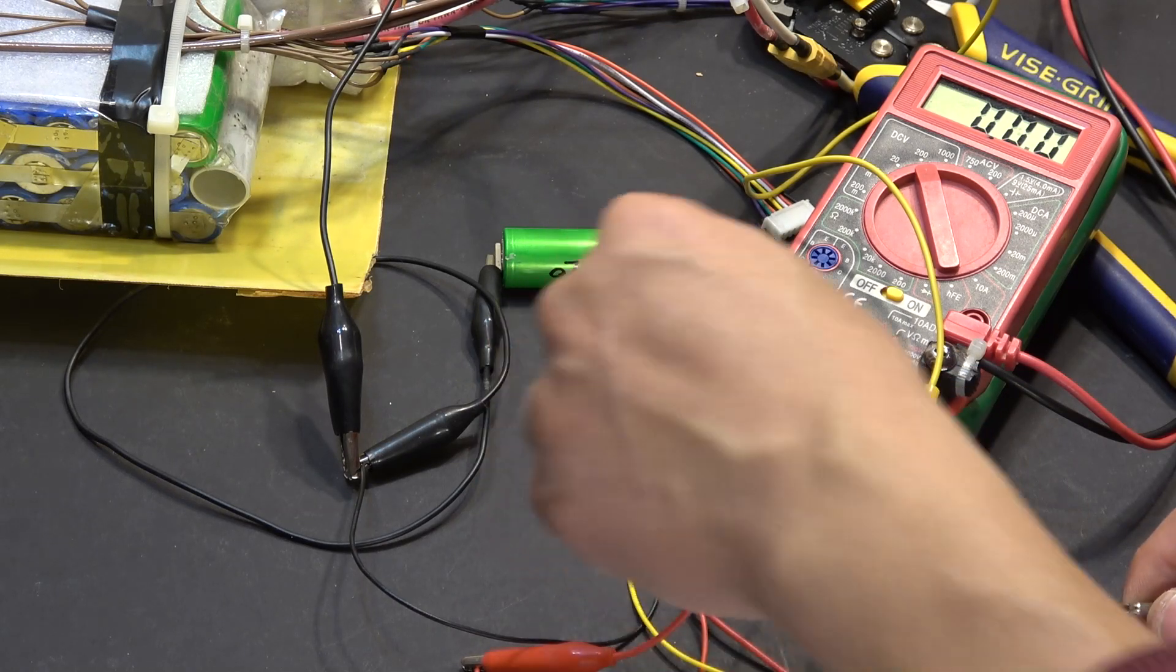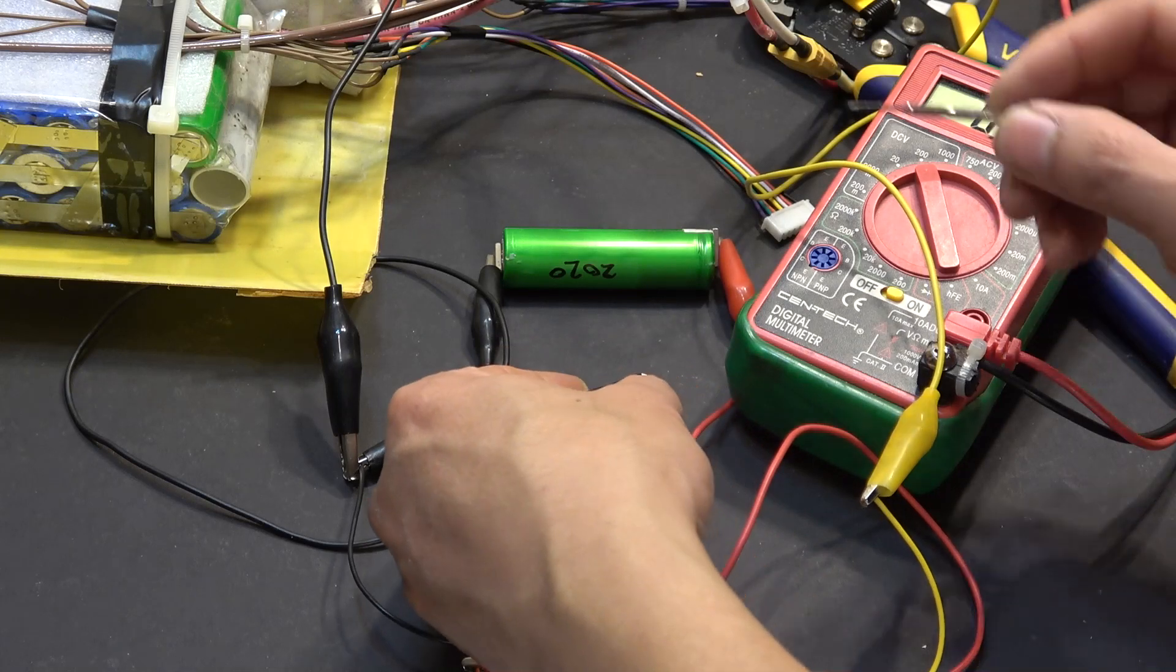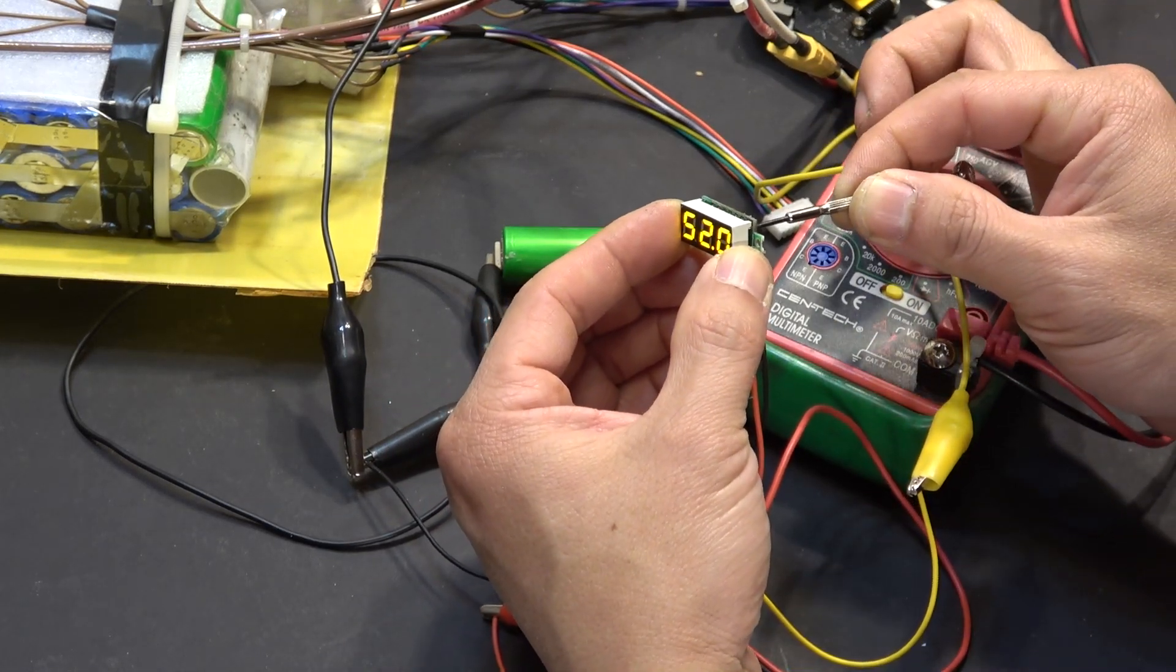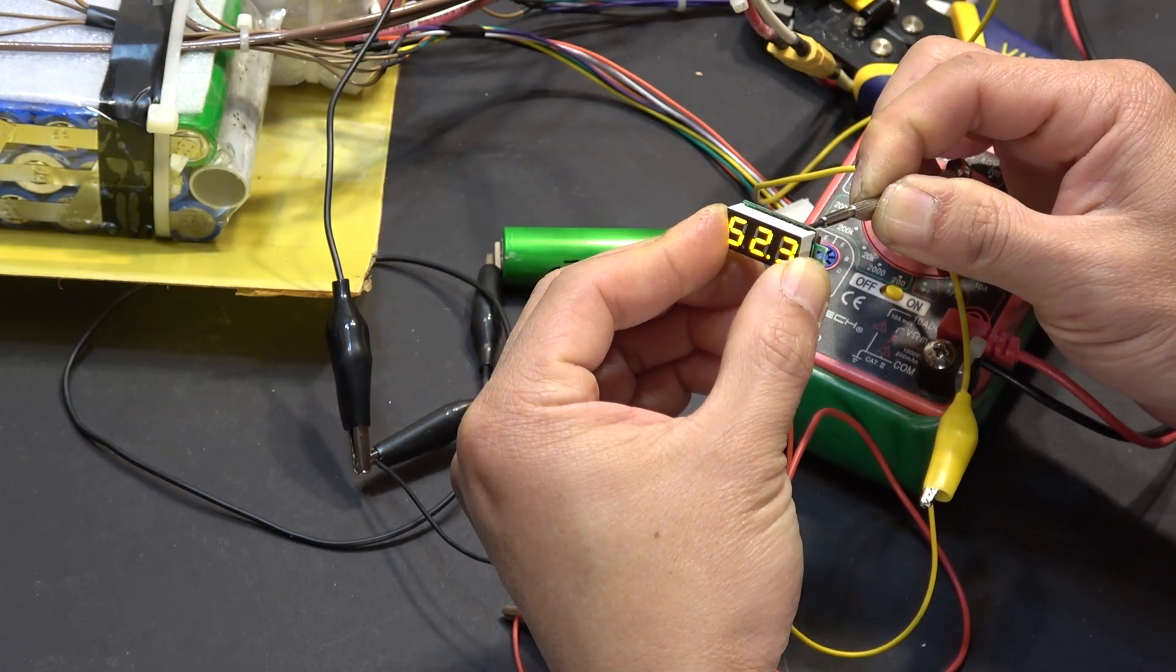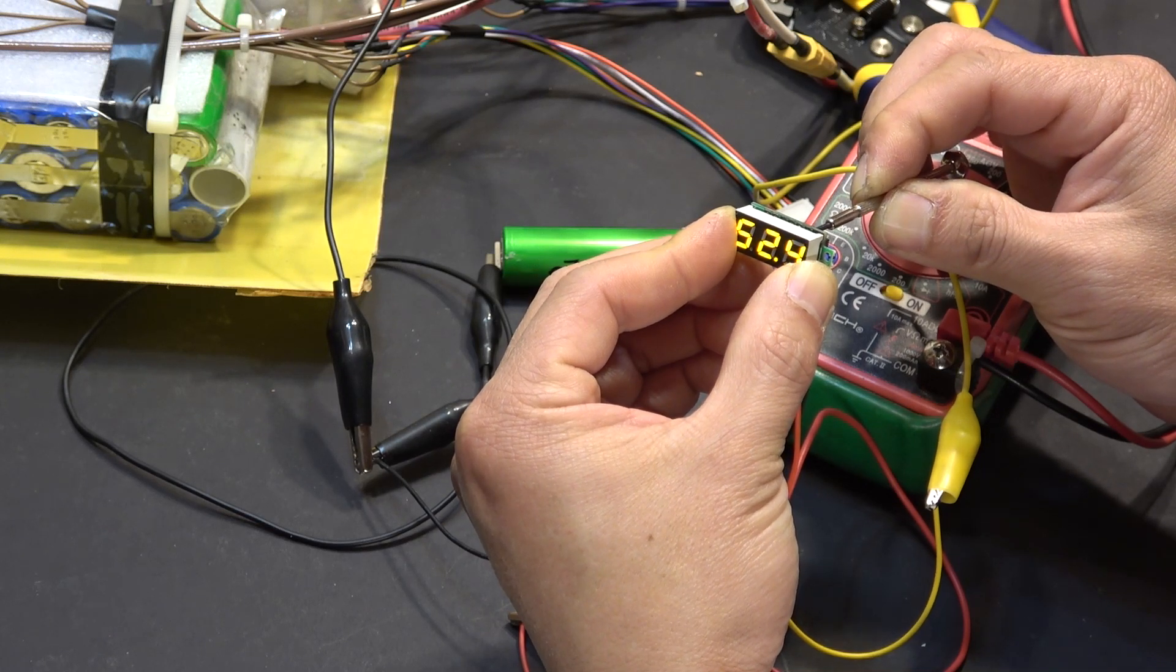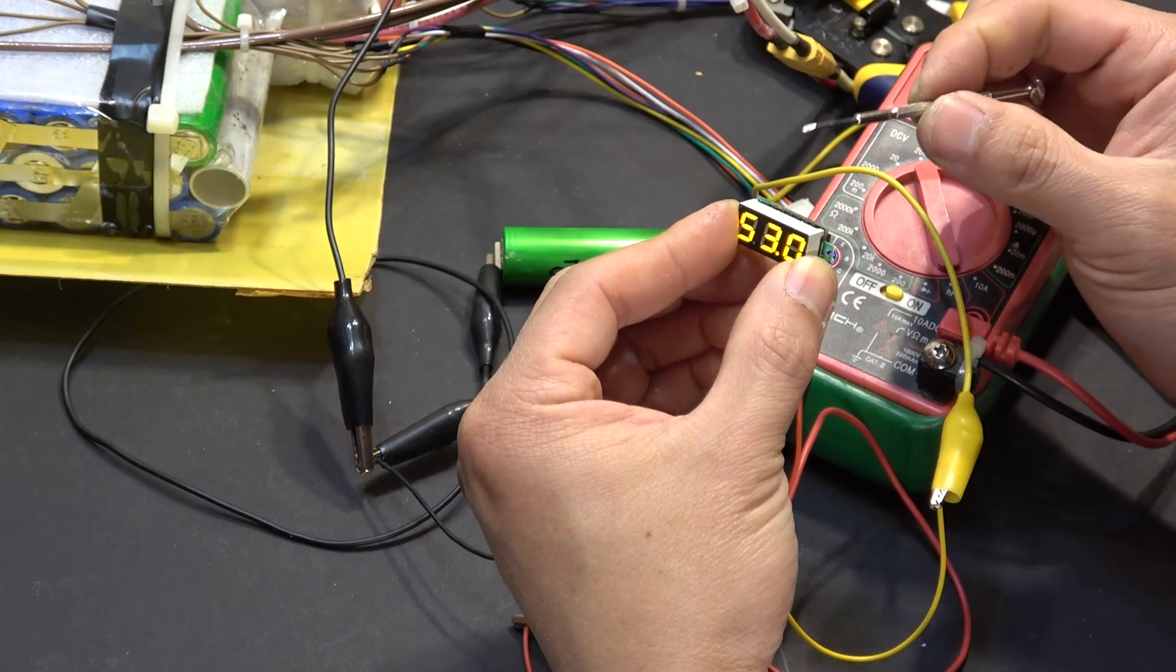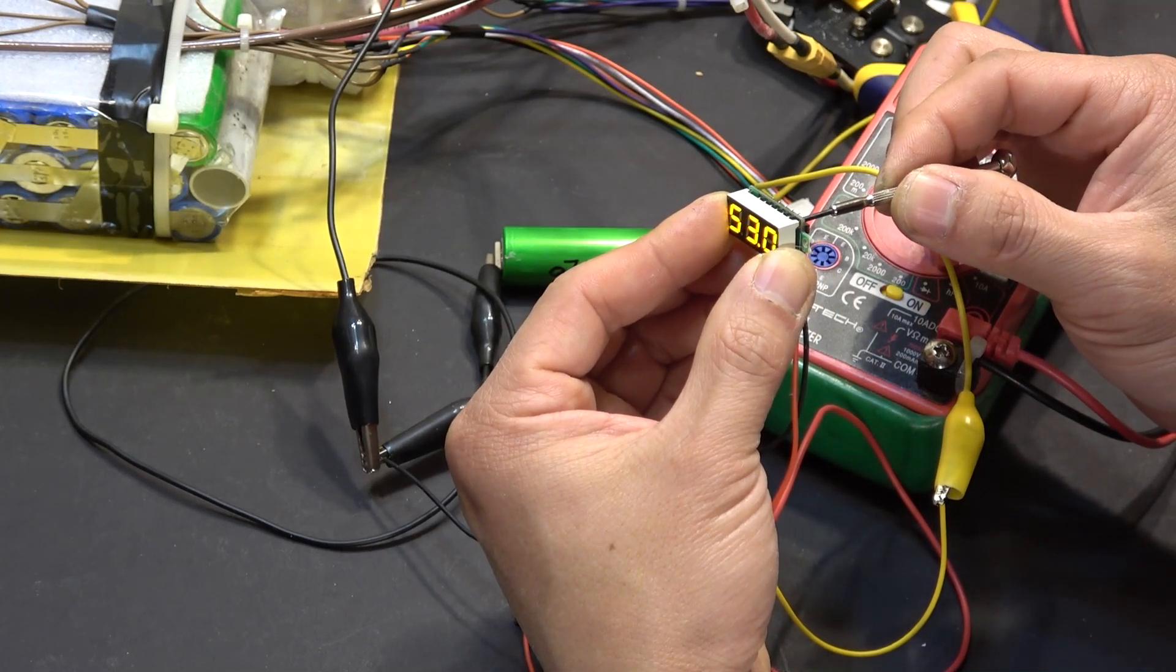So right now it's 52 volts. We need to increase it to 54. So I'm going to turn this counterclockwise and see there, it's increasing as I turn. So we need about 54 volts. 53.9, 54 volts.